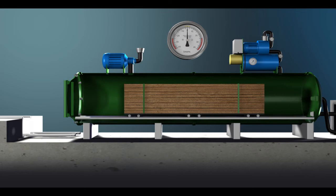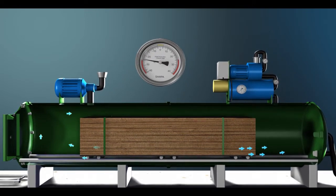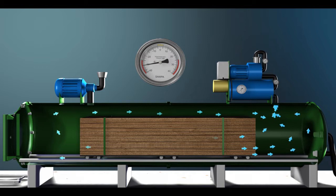An initial vacuum is introduced to the cylinder by means of a vacuum pump. The vacuum is maintained for a period to extract air from the cylinder as well as the wood cells, making the timber easier to impregnate with a preservative.